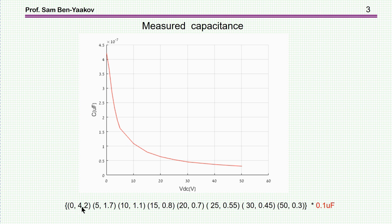These are the actually measurement points: 0 volt, 4.2, this is times 0.1 microfarad; 5 volt, 1.7, etc. These are the breakpoints here. We haven't bothered to fit it to a nice polynomial curve. This is just the raw data here and a straight line between them.